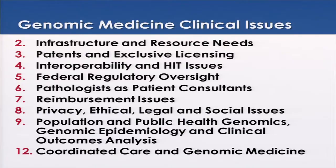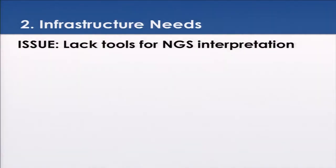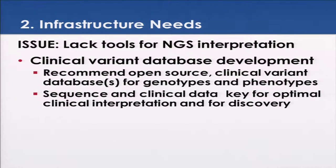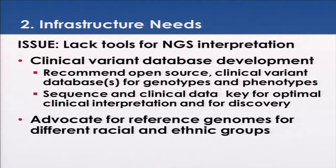These are the clinical issues I picked out. There are lack of tools for NGS interpretation. We've talked about the need for a clinical variant database — genotypes plus phenotypes, both inherited and somatic, are needed. Not only phenotype, but potentially outcomes data also. And we need reference genomes for different racial and ethnic groups.